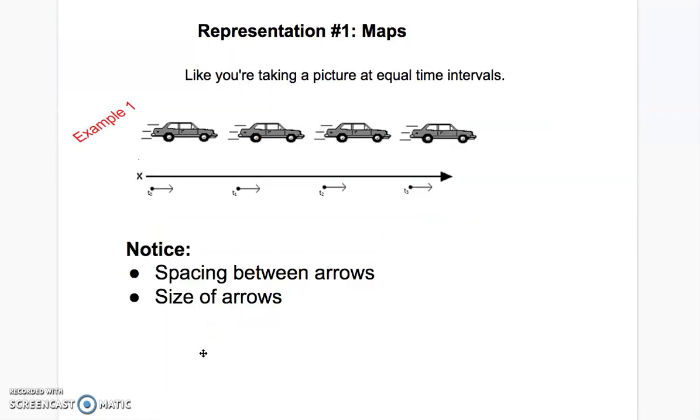But there's this really cool representation that we're also going to use called a motion map. And the idea of a motion map is that it's kind of like you're taking a picture with a strobe light. So we're taking pictures at equal time intervals of where the object is. So here you can see I have actually a drawn picture of the object, but the motion map is actually just this part.